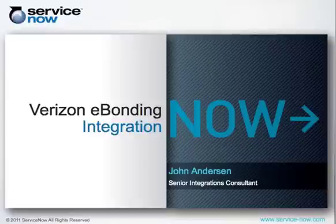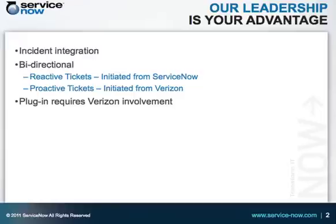Welcome to our quick demo on the Verizon eBonding integration with ServiceNow. The Verizon eBonding integration is essentially an incident integration between ServiceNow and Verizon eBonding Business Services. It is a bi-directional integration, meaning changes can happen both on the ServiceNow side as well as the Verizon side, and they'll be reflected in both systems. The plugin supports the concept of both reactive tickets as well as proactive tickets in the Verizon system.